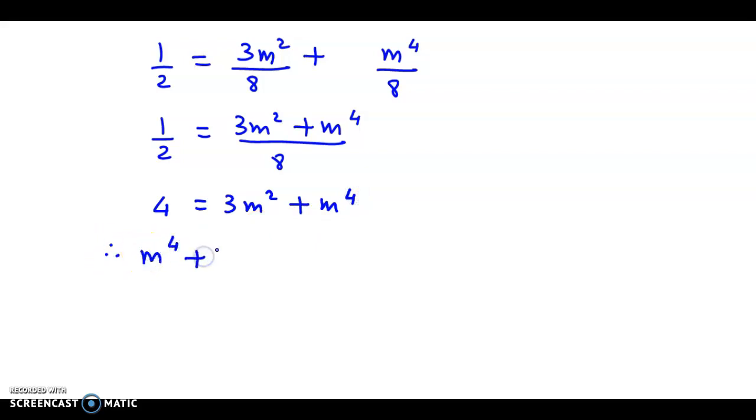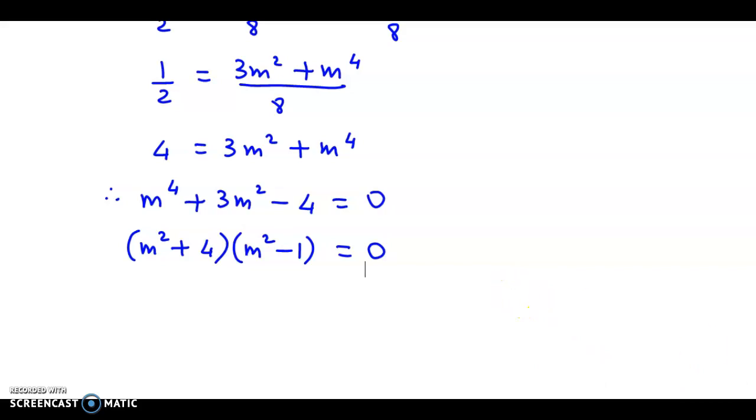m^4 + 3m^2 - 4 = 0. If we factorize, the two factors are (m^2 + 4) and (m^2 - 1) = 0. From here we get the values for m.